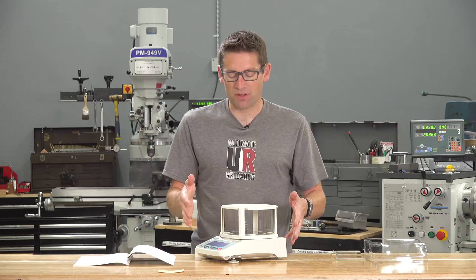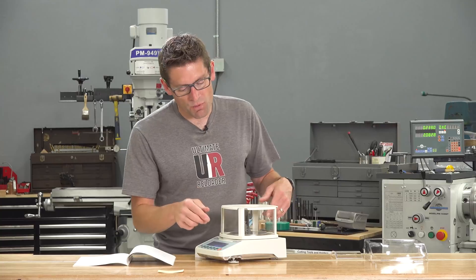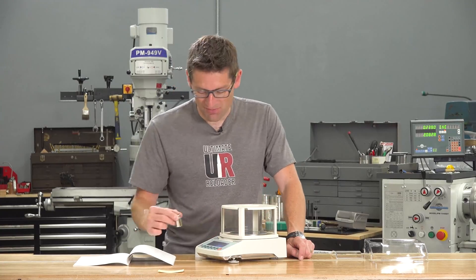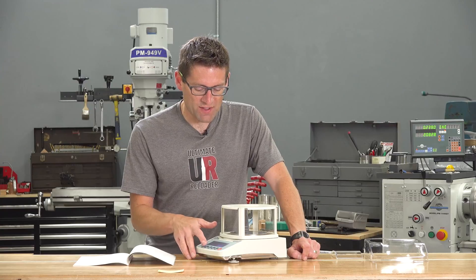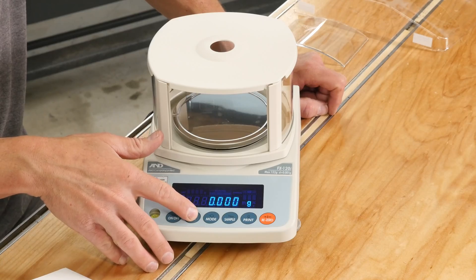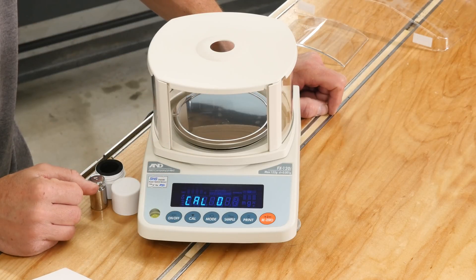Now at this level of precision, you'll notice if you bump the table or if there's any air currents, you'll see that number fluctuate. We're steady here and that's because I did a practice run on the calibration. Let me show you what that process looks like. So if you hold down the Cal button, it's going to indicate Cal out. That's the external calibration indication.